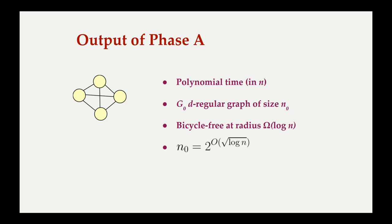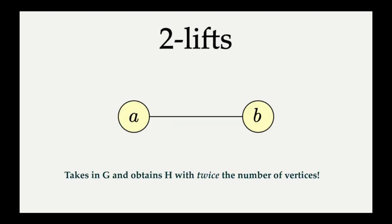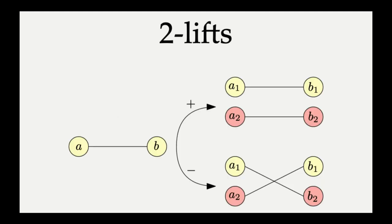Let us now turn our attention to that. To delve into Phase B of our construction, we first introduce the notion of a 2-lift. A 2-lift is a method of obtaining a graph H from another graph G, where H has twice the number of vertices of G, and H also preserves some nice properties that G might have.